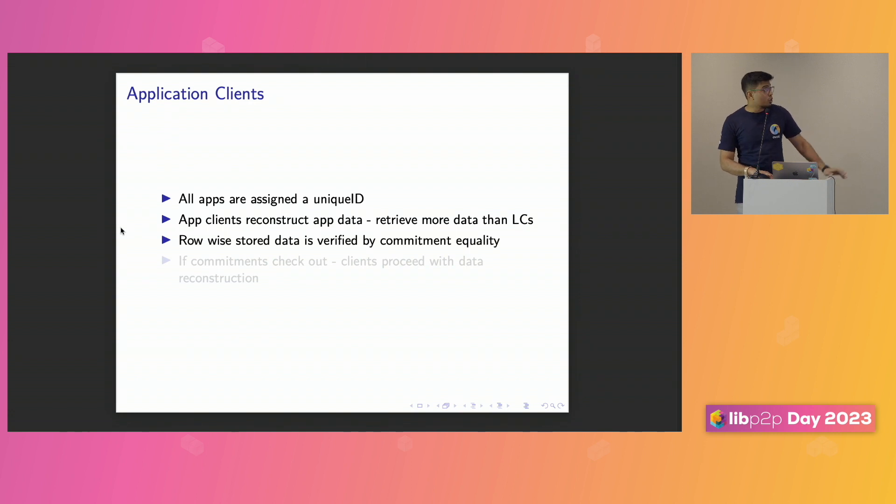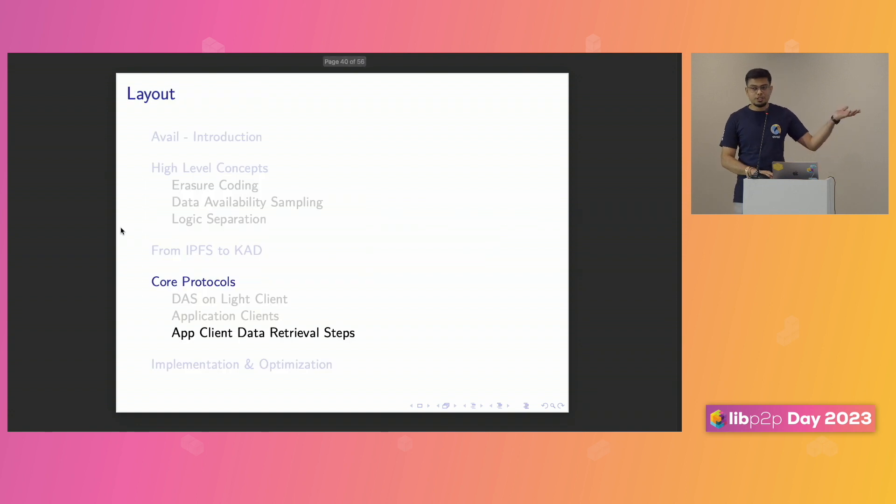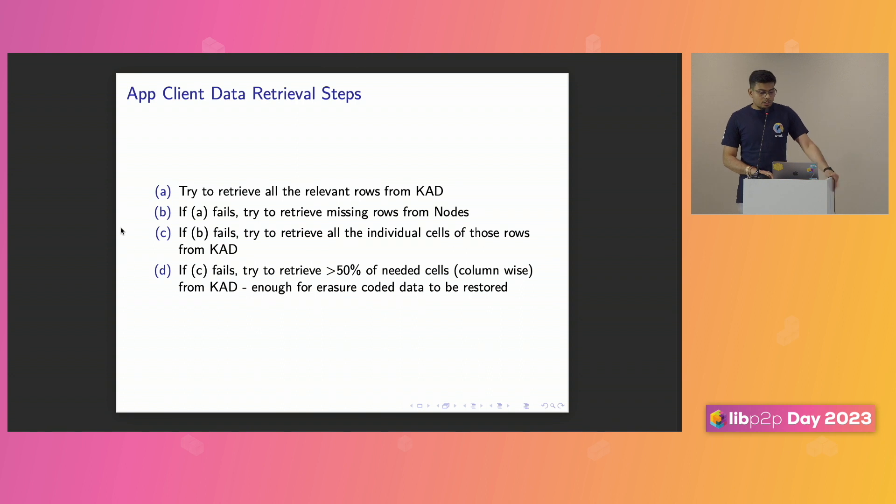So, to keep things in perspective, we have around 64,000 cells per block. So those many entries need to hit the DHT, which can be a problem if you want to download a host of them onto a single client. And that's why we store the row-wise data, which is verified by the commitment checks. So if the commitment checks out, that's great. You just proceed with data reconstruction, which you can do because it's erasure-coded, which means that even a small subsample of the cells can be used to reconstruct the entirety of the data. But at the same time, if you do not get it, you can always have a fallback to download it cell by cell. Of course, from the DHT first and then the RPC. If it can retrieve more than 50%, then it can reconstruct the original data.